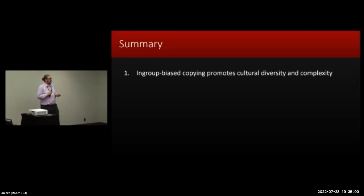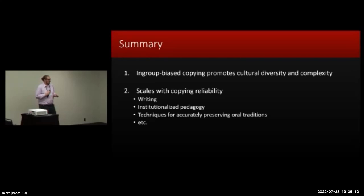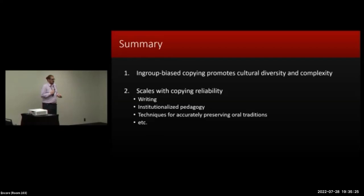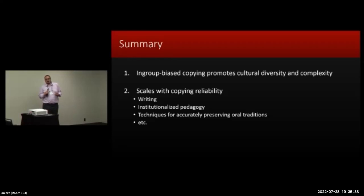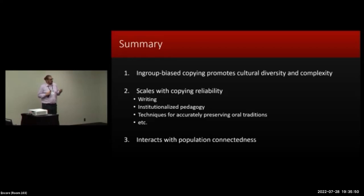To summarize our findings: much like population connectedness, we find that in-group bias copying does promote cultural diversity and cultural complexity when generalized to large populations over long time scales. The extent to which the in-group copying bias influences cultural complexity scales with the reliability of copying. One consequence is that populations with mechanisms for stabilizing cultural transmission — such as writing, institutionalized pedagogy, or techniques for preserving oral traditions — which are typically more vulnerable to cultural homogenization, would be expected to benefit more from an in-group copying bias for promoting cultural diversity and complexity. Finally, this in-group copying bias interacts with population connectedness, so you cannot look at each of these independently — you have to consider them both in the context of the other.